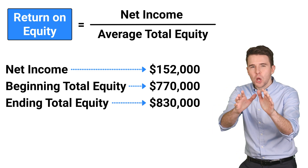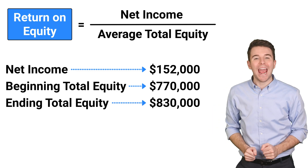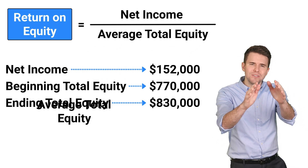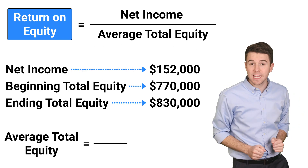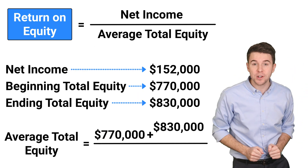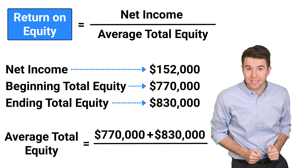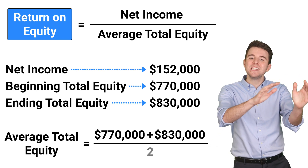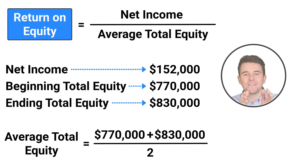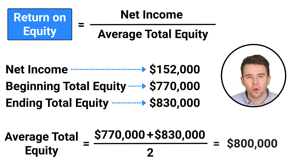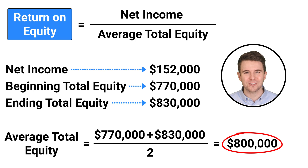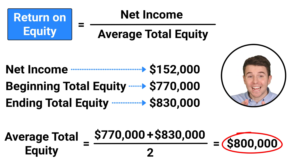First, we need to compute average total equity. To do this, we take $770,000 and add $830,000 and then divide by two, which gives us average total equity of $800,000.